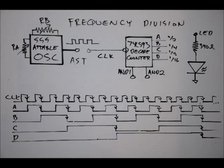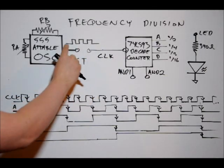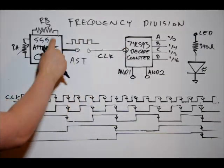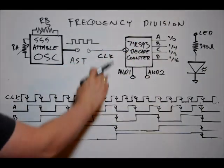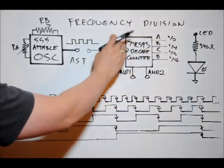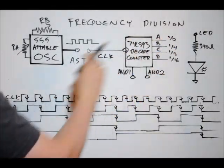And that said, when we feed a clock from our pulse, a frequency from our oscillator, our 555 timer in astable mode, what will happen is the A output will be half of that frequency, B will be one-fourth, C will be one-eighth, and D will be one-sixteenth.